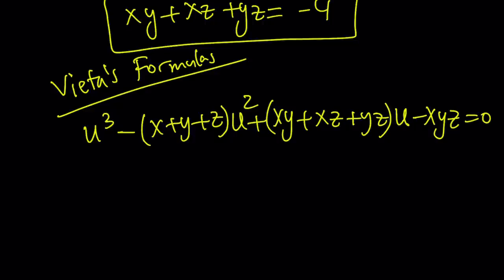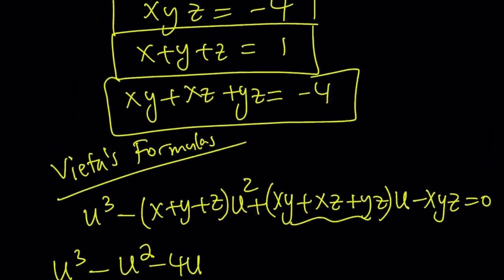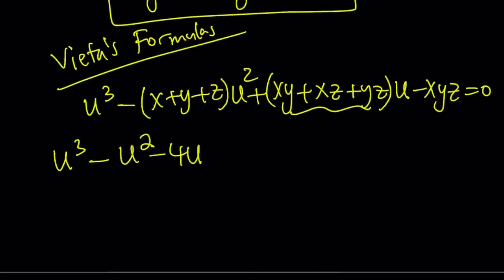Now we can go ahead and replace x plus y plus z with 1. So it becomes u cubed minus u squared. And then this is negative 4, so it becomes negative 4u. And xyz, remember we just found it, it's equal to negative 4, so it becomes positive 4. And the whole thing equals 0.